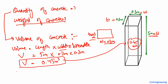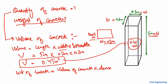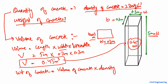Now, how to find out the weight of the concrete in kg or in tons? To find out the weight, we multiply the volume of the concrete by the density of the concrete. The density of the concrete is 2500 kg per cubic meter. So the weight of the concrete equals the volume, which is 0.45 cubic meters, multiplied by the density of 2500 kg per cubic meter.